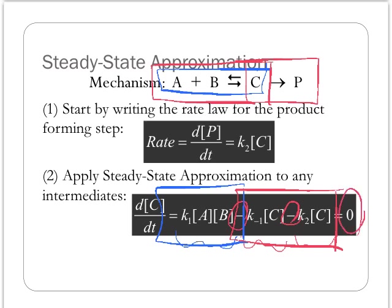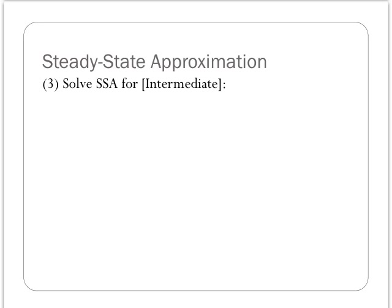Now, let's keep moving with this algorithm. Now I have my steady state approximation for my intermediate. Now I'm going to solve that steady state approximation for the unknown concentration, namely, the concentration of the intermediate.